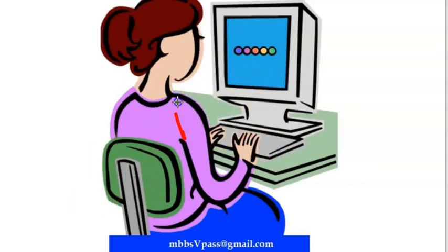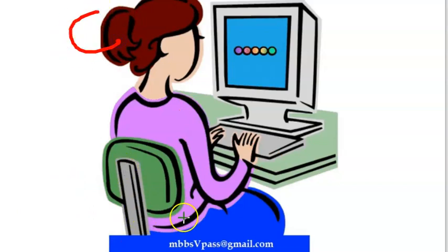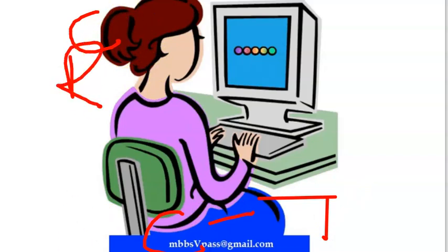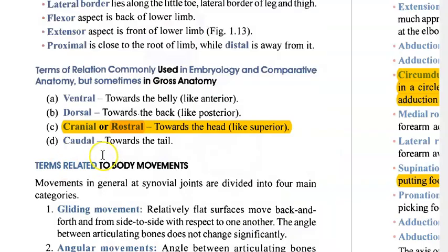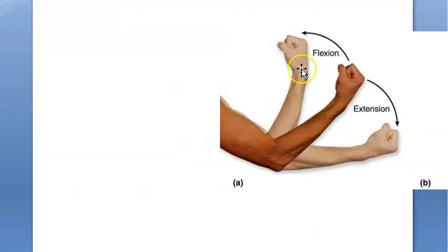You can also say ventral for front and dorsal for back. Proximal and distal mean near and far. Cranial (also called rostral) means towards the head — equivalent to superior — and caudal means towards the tail, equivalent to inferior.